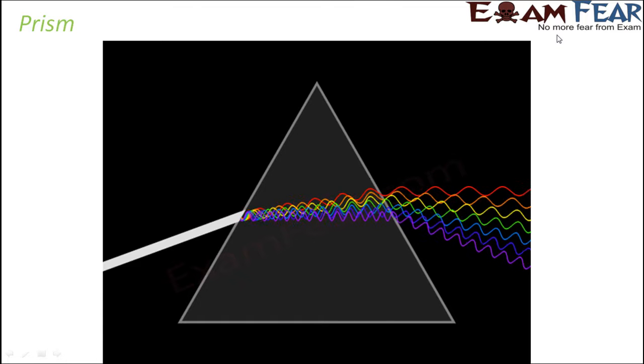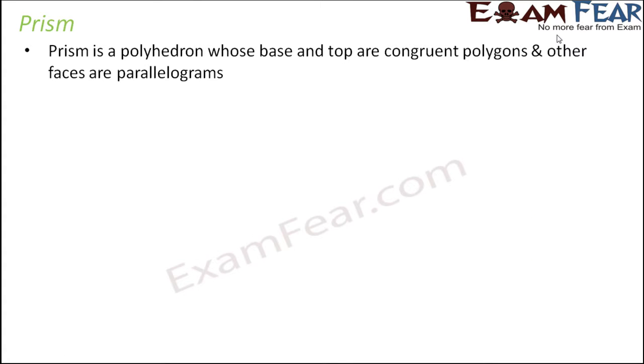So how does a prism actually look like? The shape of a prism is also like a polyhedron where the base and top are congruent polygons and other faces are parallelograms. So let us look at a simple prism. This is how a prism looks like. I am sure you would have seen a prism in your science laboratory in schools.